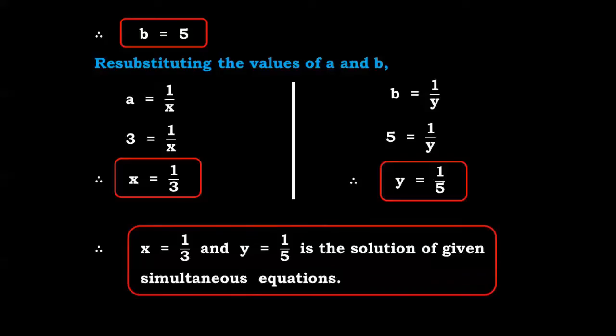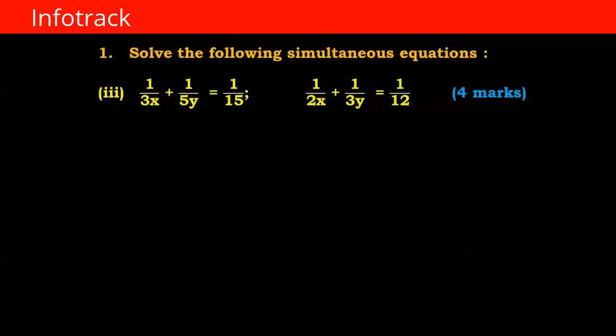We can solve equations of this type when there is a variable in the denominator. Now see the next question, number 3: 1 upon 3x plus 1 upon 5y equals 1 upon 15, and 1 upon 2x plus 1 upon 3y equals 1 upon 12.